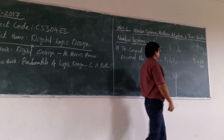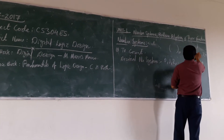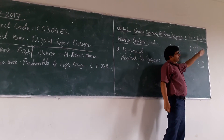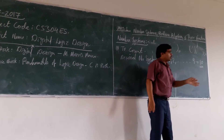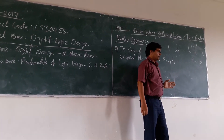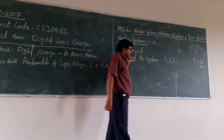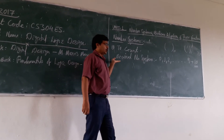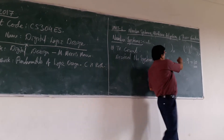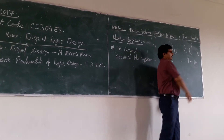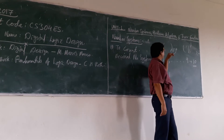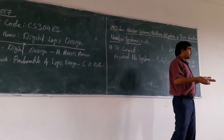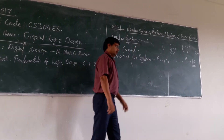Another option is we don't write anything. If you are not writing anything at the base, it is also understood to be your decimal number system. As we are basically using the decimal number system, there is no need to write anything at the base. If you are using some other number system, then you need to mention it.